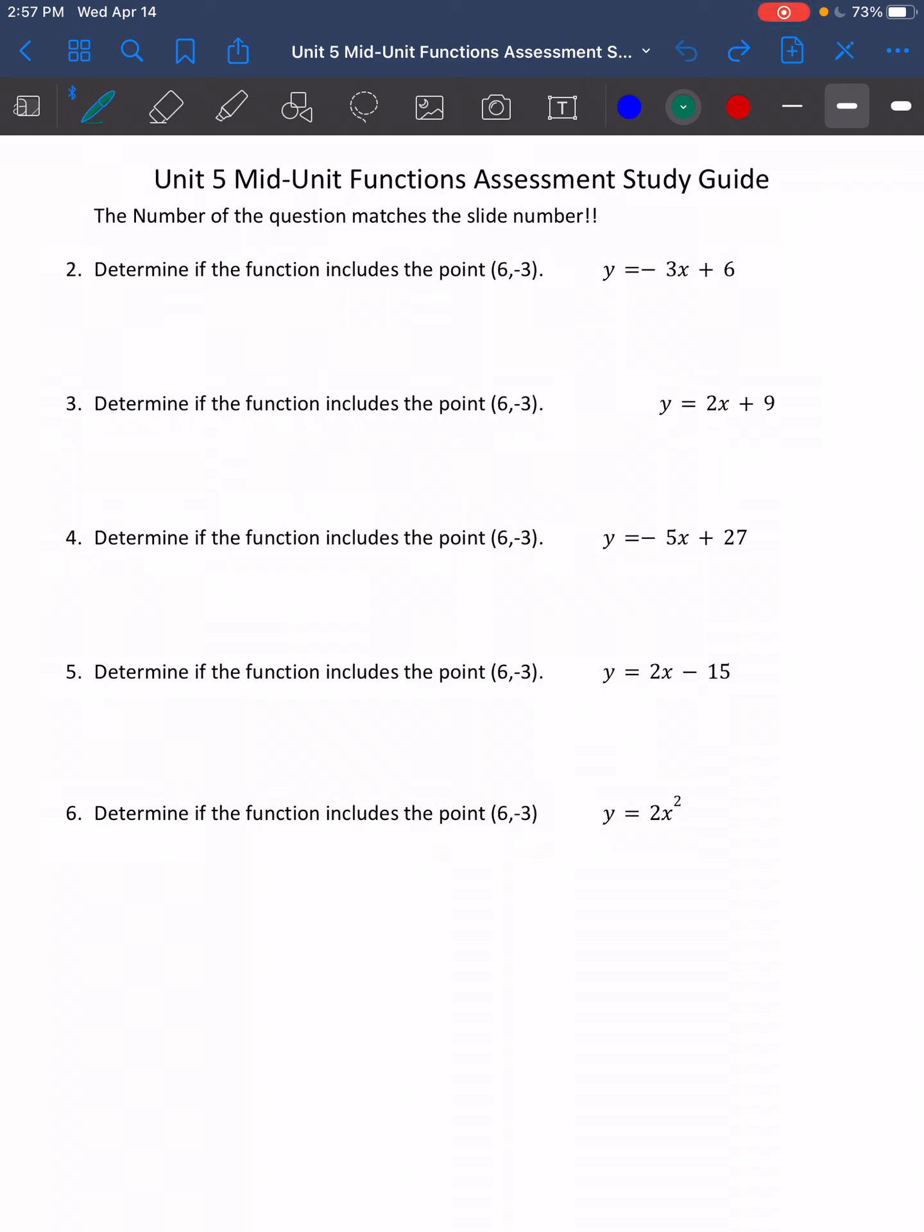For problem number two, I'm going to do two of these problems and then the rest you'll just have to look at the answers when I post the study guide. You need to determine if the function includes a point 6 comma negative 3. Remember our coordinates are x comma y. So what I have to do is substitute into that equation that I have. So negative 3 equals negative 3 times my x value, which is 6, plus 6.